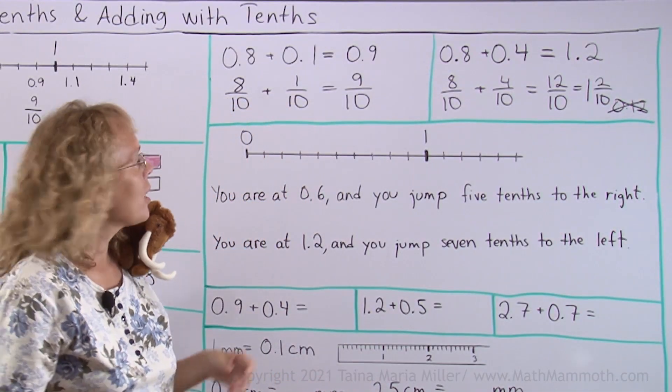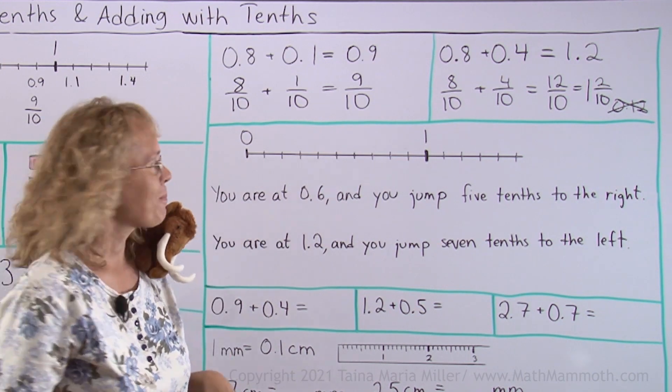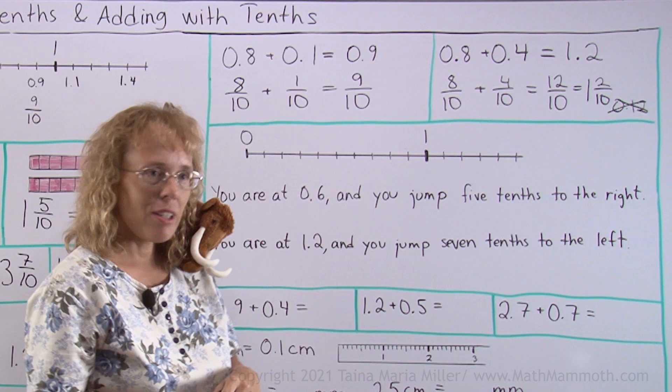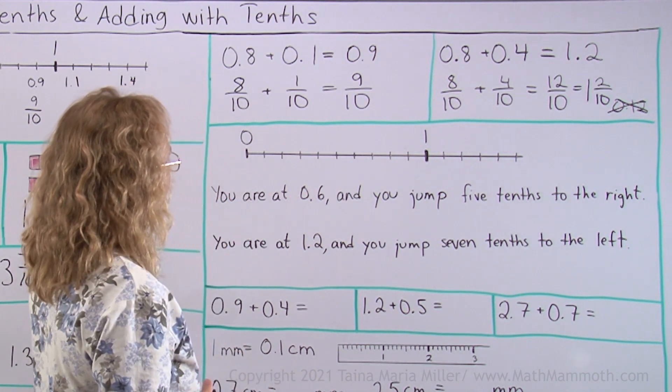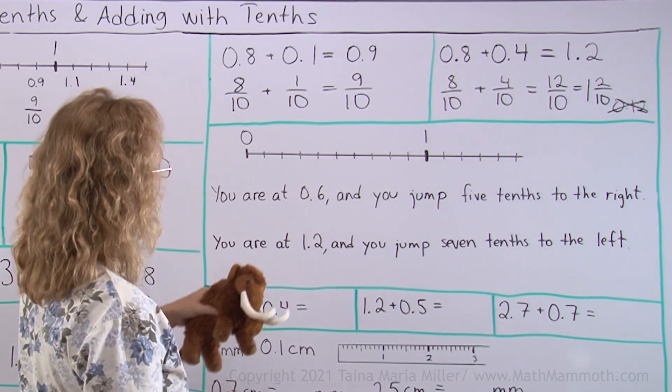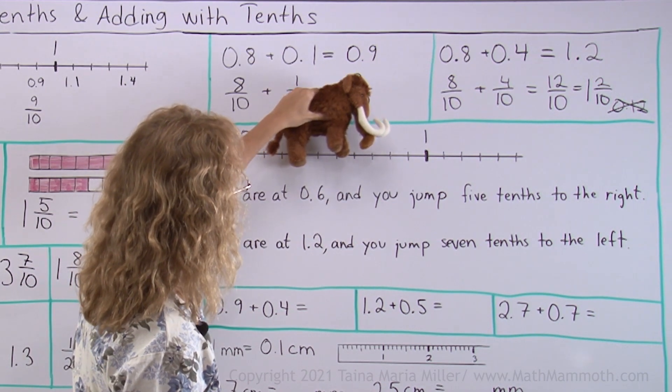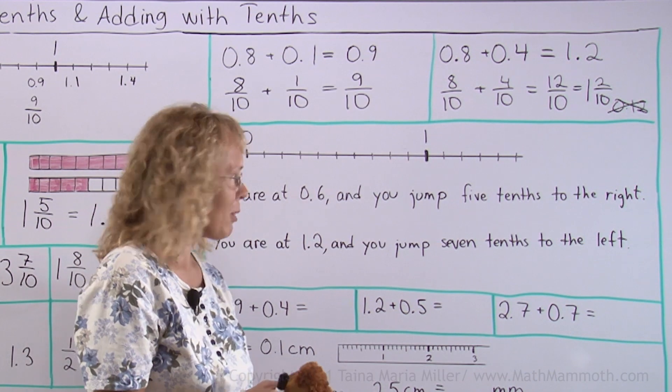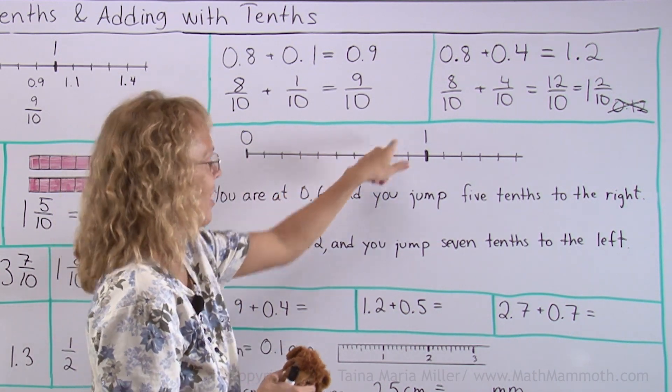And we will practice that some more here, jumping on the number line. Okay? What is it, Matthew? Oh, you want to jump on the number line? Well, honey, you see, if I put you somewhere, we can't even tell where you are at exactly. You're way too big for this number line, Matthew. It won't work. We just have to use my finger. Like that. Okay?